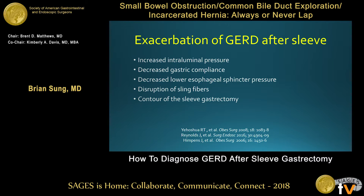Why does this happen? In terms of exacerbation of reflux after sleeve, some of the thoughts are increased intraluminal pressure, decreased gastric compliance, and decreased lower esophageal sphincter pressure. A study out of USC using impedance planimetry showed that distensibility occurred right after completion of the sleeve gastrectomy. Anatomically, there's disruption of the sling fibers — the collar of Helvetius — which can affect LES pressure. The contour of the sleeve is also not standardized; whether you go 2, 4, or 6 centimeters from the pylorus, use a 32, 38, or 40 French bougie, or oversew the staple line, there are many variabilities in technique.